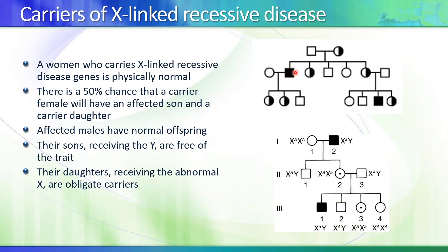If an affected male's daughter — an obligate carrier — marries a normal male, she has a 50% chance of transmitting the abnormal X chromosome to her son, who would then be affected. An X-linked recessive disease can be fully expressed in a female if the allele frequency of the disorder is high within the population, if she is hemizygous (having only one X chromosome, as in Turner syndrome), if there is deletion of the normal allele, or if there is faulty or skewed X inactivation where the X with the normal allele is preferentially inactivated.